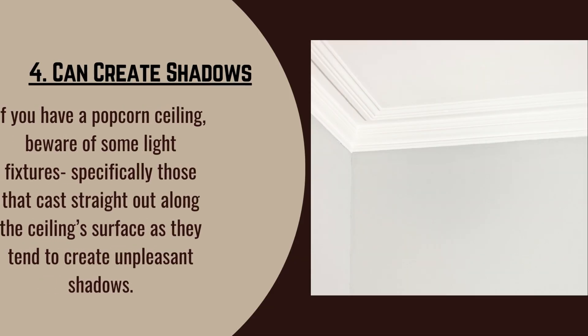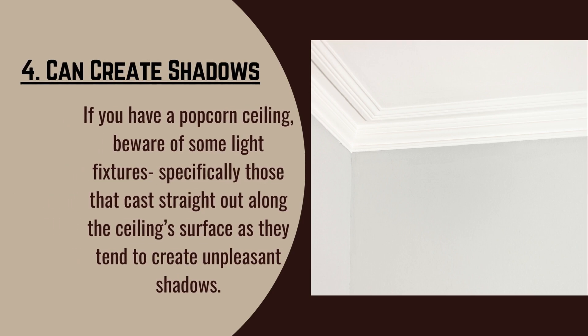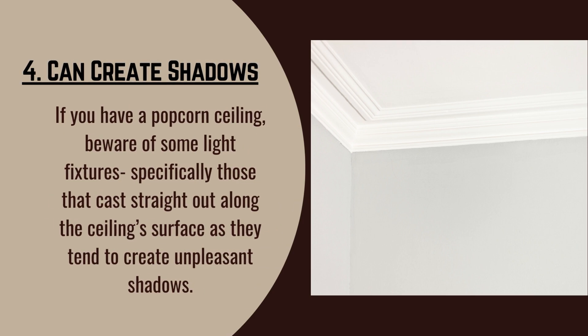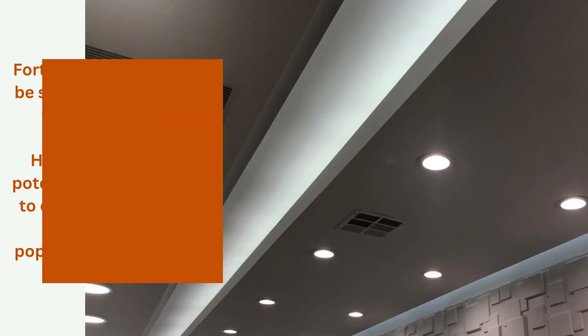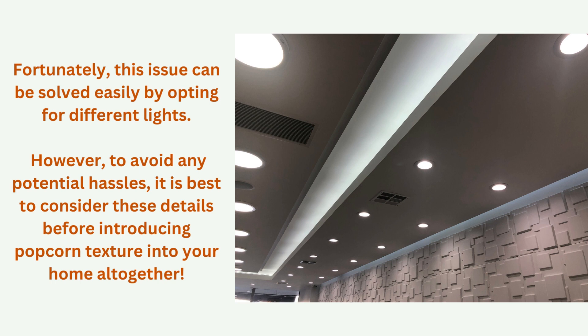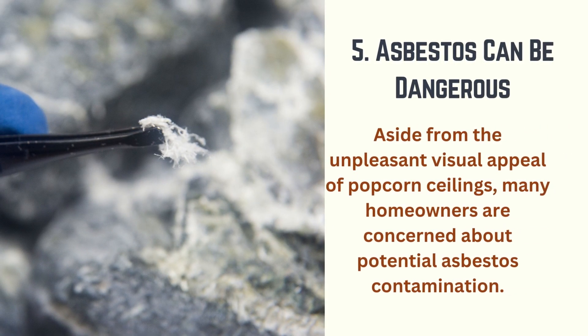Drawback four: can create shadows. If you have a popcorn ceiling, beware of some light fixtures — specifically those that cast light straight along the ceiling surface — as they tend to create unpleasant shadows. Fortunately, this issue can be solved easily by opting for different lights. However, to avoid any potential hassles, it's best to consider these details before introducing popcorn texture into your home.